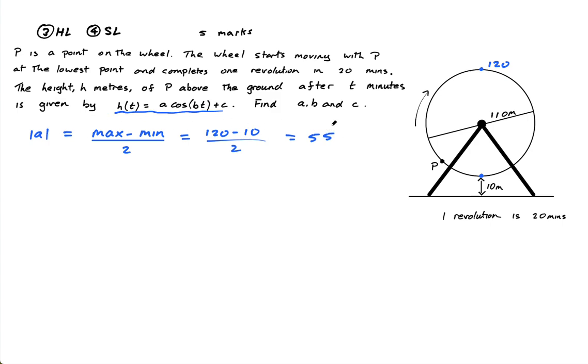Now, essentially what the mod of A means is just the modulus of A or the size of A. So I know the size of A is 55, but I don't know if it's positive or negative yet. Now I do know, but I'm going to just leave it at 55 for a second and we'll come back to it. So it's either going to be plus or minus 55.